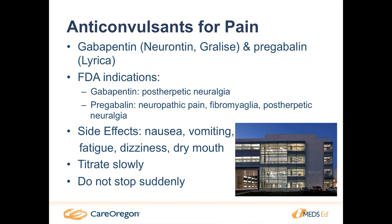Gabapentin and pregabalin both carry different indications for different pain syndromes. The common side effects are GI upset, fatigue, dizziness, and dry mouth. Specifically with gabapentin, when starting it we want to titrate slowly because of those GI effects so it's not overwhelming to the patient. And we should not stop them suddenly if they're on a higher dose — we should taper the patient off.